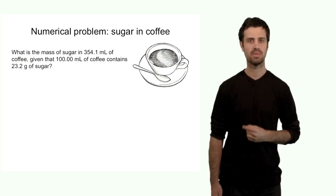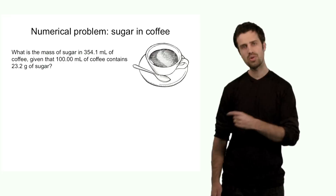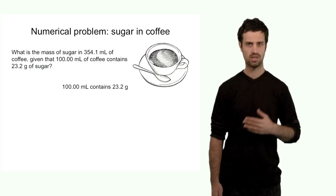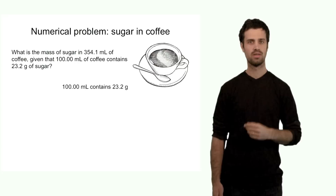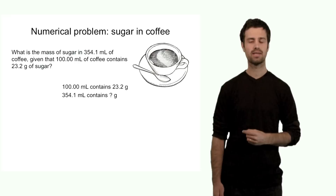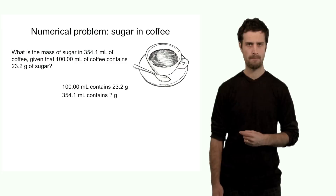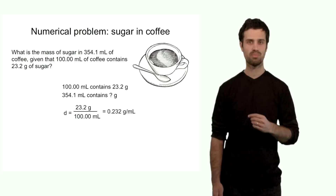This question asks you to calculate the mass of sugar in 354.1 milliliters of coffee, given that 100 milliliters of coffee contains 23.2 grams of sugar. From this, I can calculate a density — density means mass per volume. The density of sugar in coffee remains constant, so if I know the density, I can calculate the mass of sugar for any volume, including 354.1 milliliters. The density of sugar in coffee is 23.2 grams divided by 100 milliliters, which is 0.232 grams per milliliter.